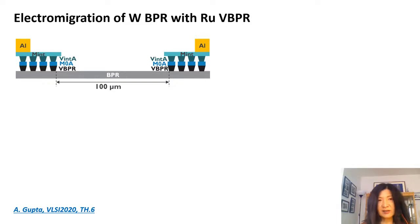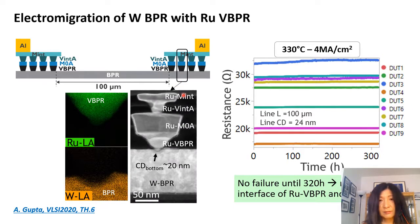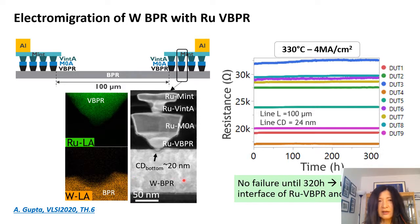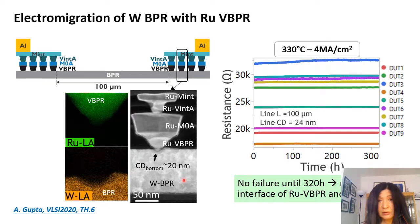Since we're talking about metals, electromigration is extremely important, especially with two different metals. Our experiment uses tungsten BPR with ruthenium VBPR, so the interface electromigration is critical. We confirmed the metal composition at ~20nm bottom CD, with ruthenium and tungsten in VBPR and BPR nicely formed. After ~320 hours of electromigration testing, we see no fails, indicating the ruthenium-tungsten interface is very stable. This is encouraging — a hybrid BPR/VBPR metal system can maintain good interface reliability.